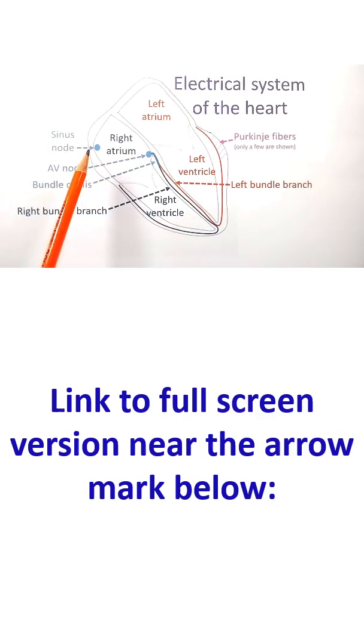The spontaneous signals for heartbeat originate in the sinus node in the upper part of the right atrium, and from there they are conducted to the AV node.